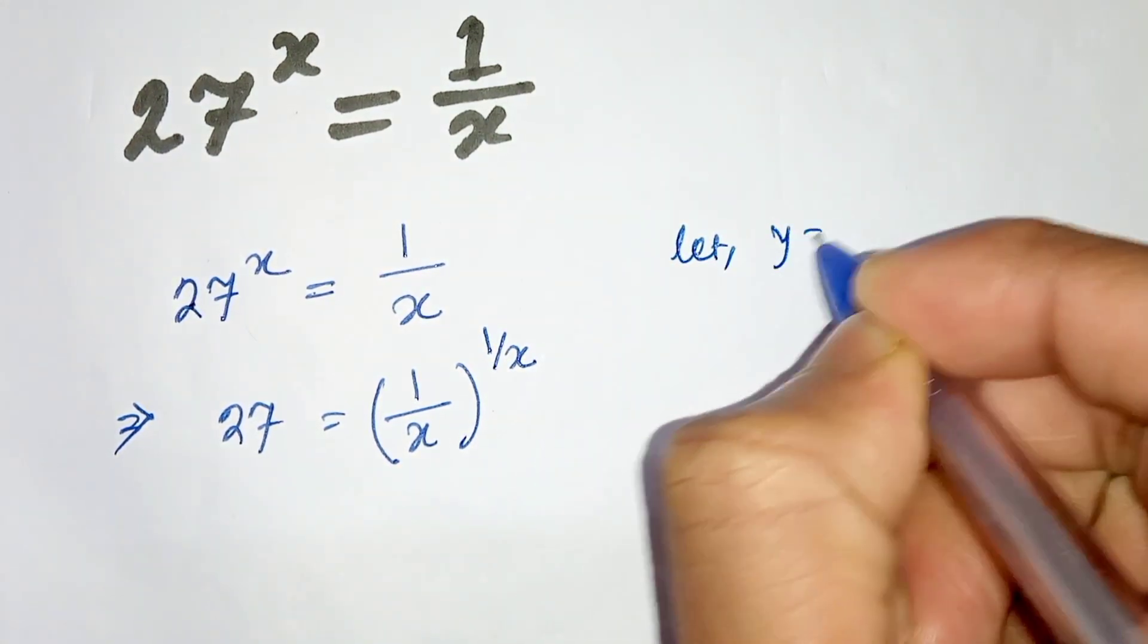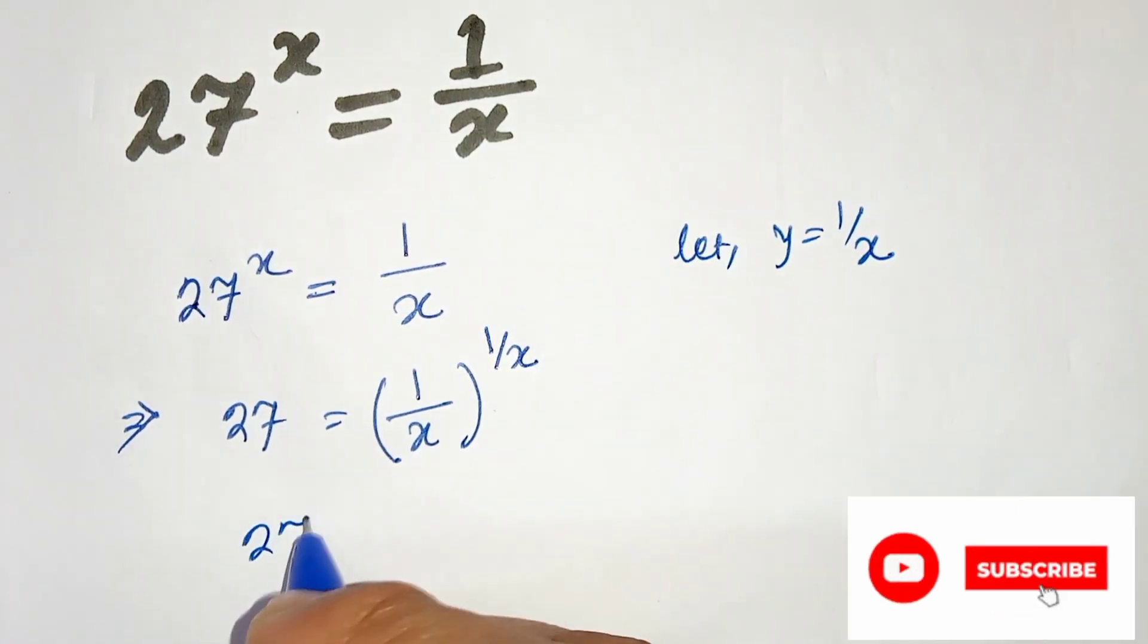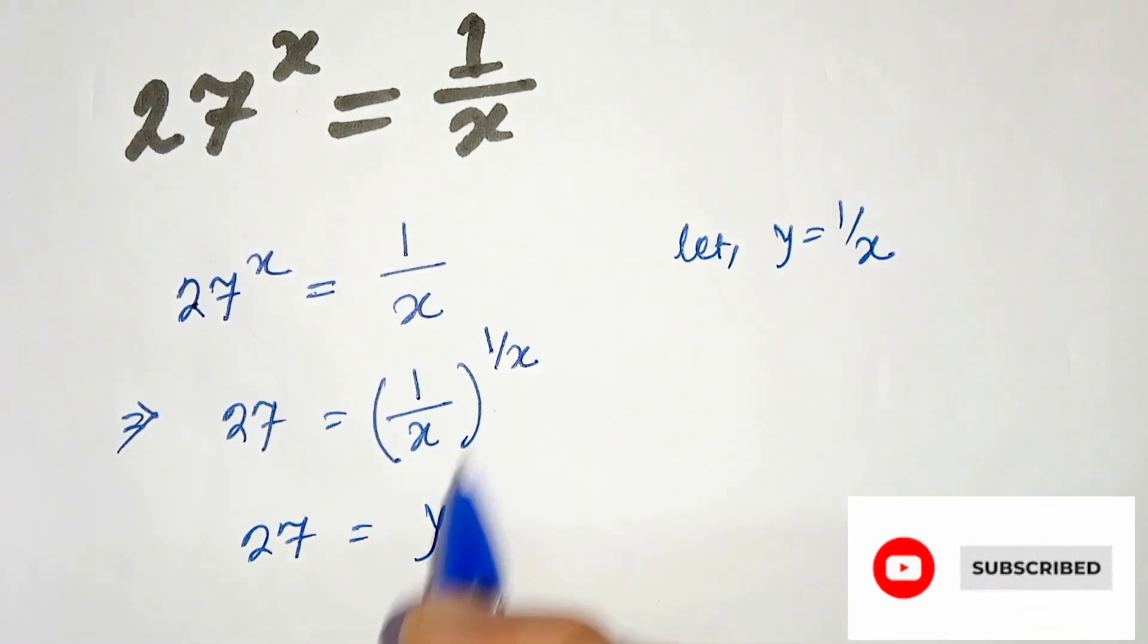Let's take y = 1/x. Therefore, 27 can be written as y^y.